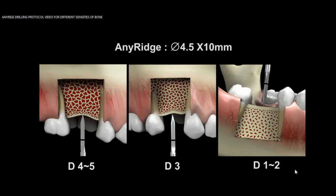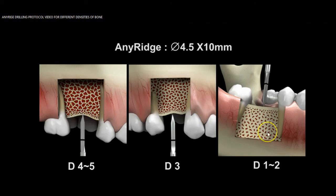A lot of docs ask me all the time, what is your drilling RPM speed? And my answer is: it depends. It depends on the different densities of bone that you're in. Do you need to use 1,000 to 1,200 RPM in D1 bone like you would in D1 bone? Do you need to use that same RPM in D4 or D5 bone? No, you don't. Every patient is different, so we have to be cognizant of the different aspects and options available to us.